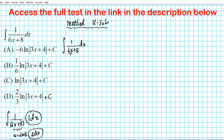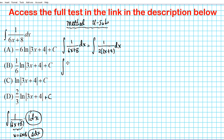Looking at the integrand, there is a greatest common factor of two that can be extracted from the denominator. So this integral can be written as the integral of one over two(three X plus four) DX. There is the three X plus four that reveals itself in the options. When solving multiple choice questions on the AP exam, pay close attention to the options because they give you clues as to how to solve the problem. We can factor out the one half: we have one half times the integral of one over (three X plus four) DX.